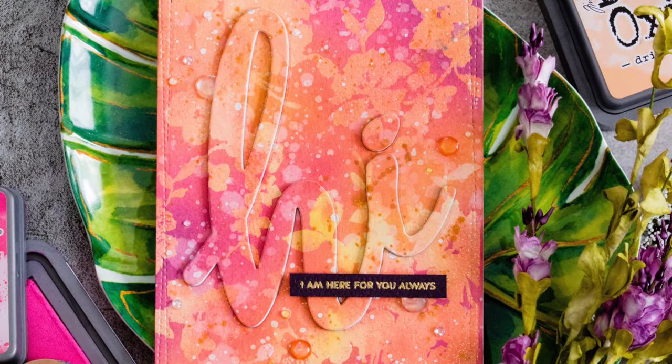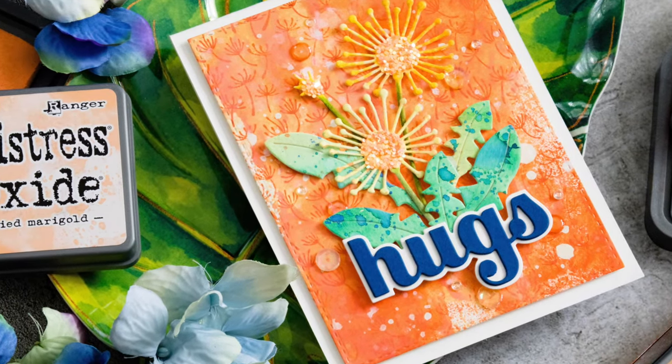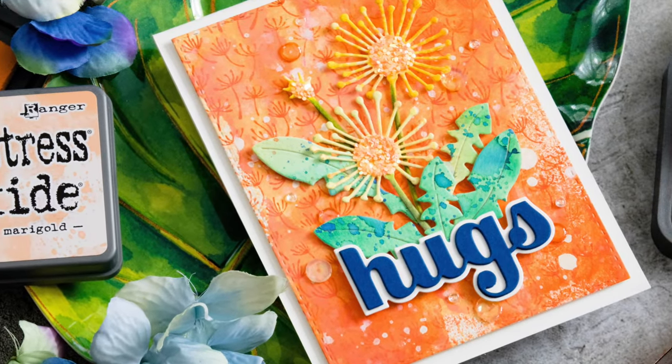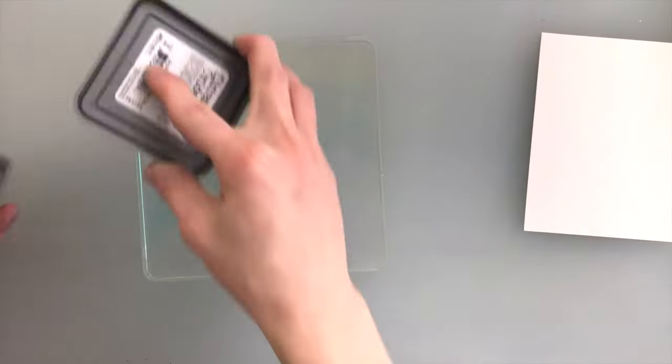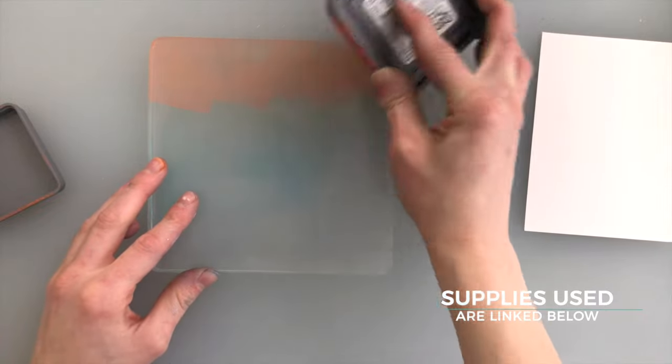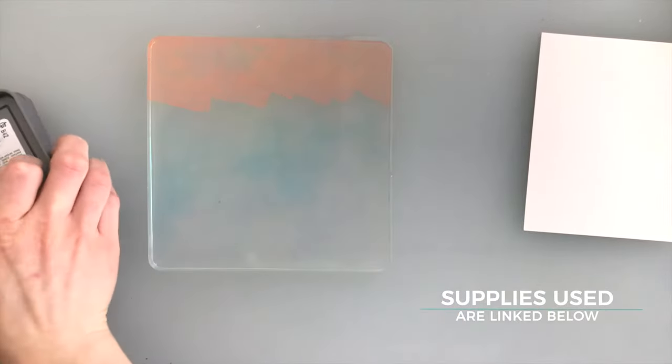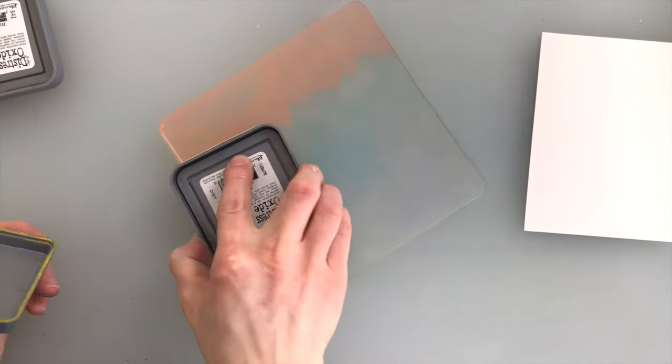Starting off with this ink smushed tone-on-tone background stamping technique, I'm going to start by taking some distress oxide inks and pressing them onto a gel press. This jelly-like surface is great for ink smushing because it really holds the inks in place. I'm going to carefully make sure I don't overlap the ink too much.